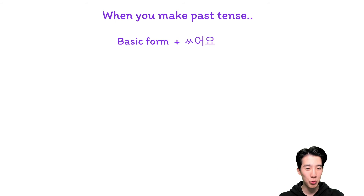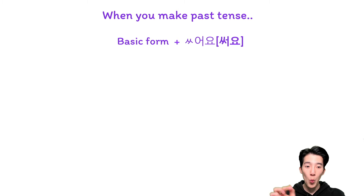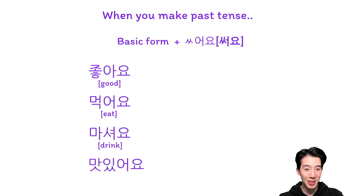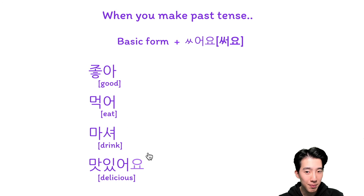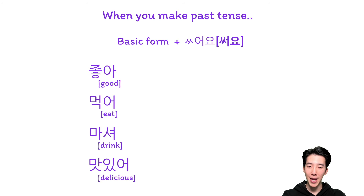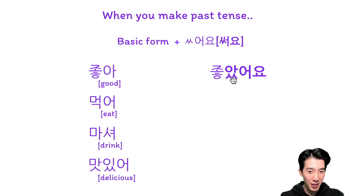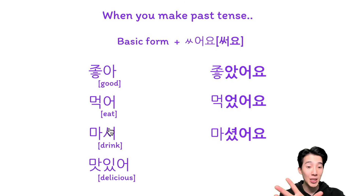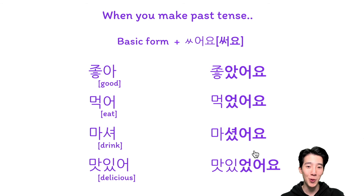So when you make the past tense — take the basic form, add 받침, but because of that combination there's no separate sound — you're going to pronounce it as 써요. So when you speak past tense: make the basic form, then add 써요. So here: 좋아요 → 좋았어요, 먹어요 → 먹었어요, 마셔요 → 마셨어요, 맛있어요 → 맛있었어요. Just drop the 요, you get the basic form: 좋아, 먹어, 마셔, 맛있어 — then add 써요.